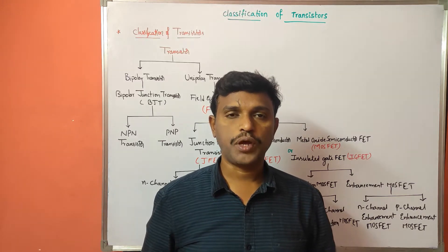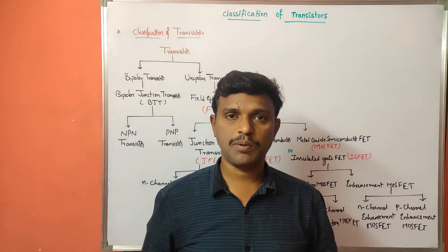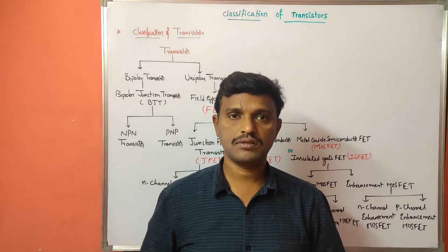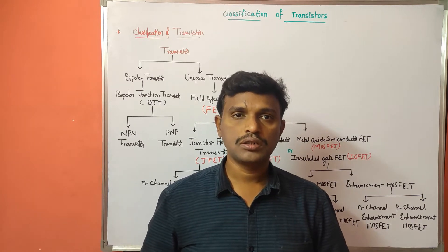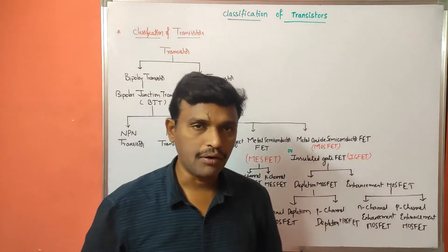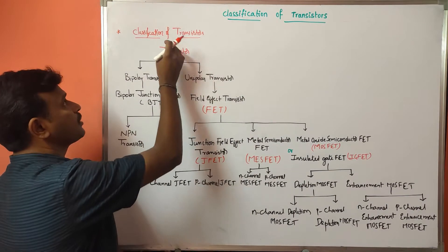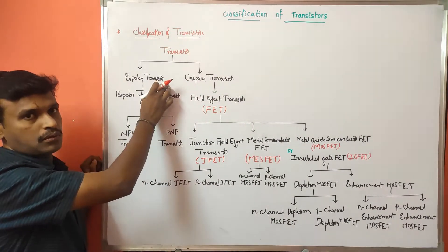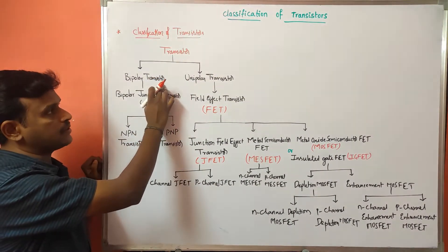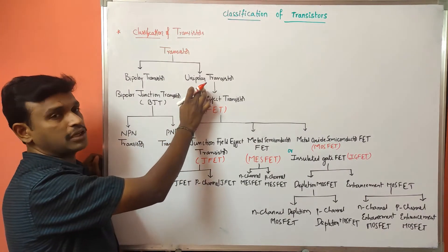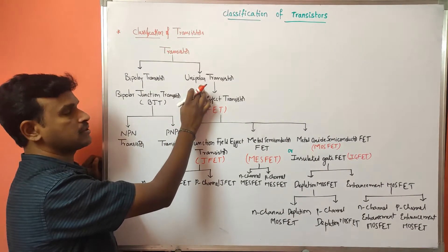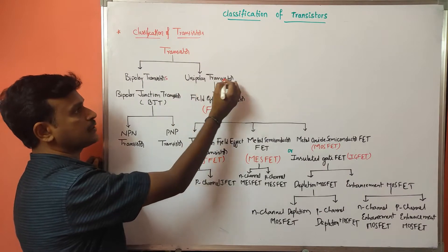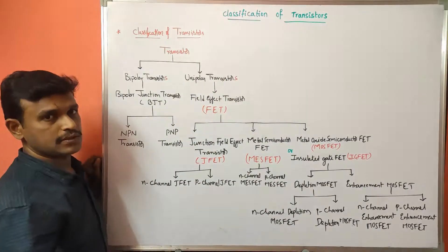Hello everyone, today I am going to explain about the classification of transistors. So basically transistors have two types: one is bipolar transistors and another one is unipolar transistors.